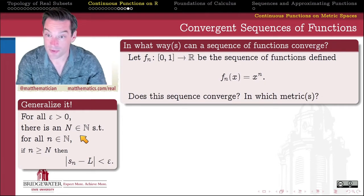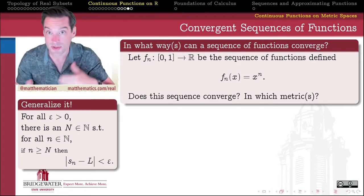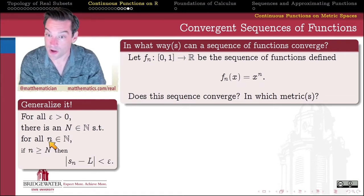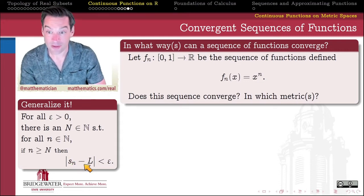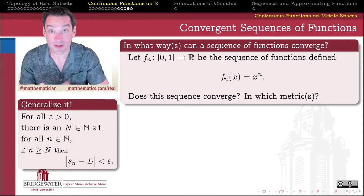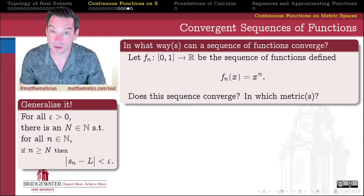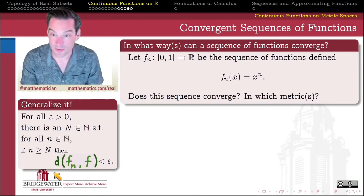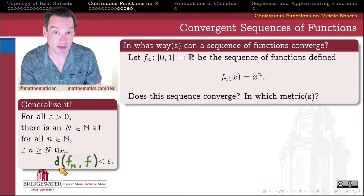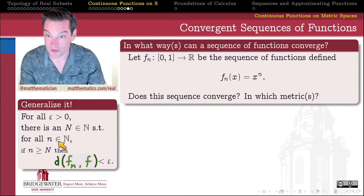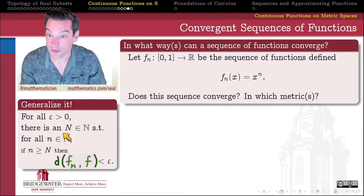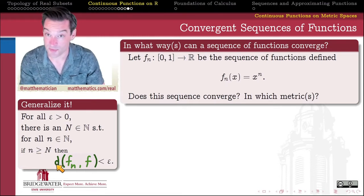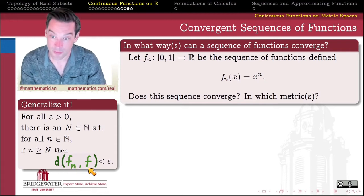The first thing we ought to do is generalize the definition of convergent sequence. Our definition from sequences of real numbers specifies that for any ε > 0, we can find a natural number N such that for all natural numbers n, if n ≥ N, then the absolute value of the difference between the nth term and the limit L is less than ε. To generalize this, we replace the absolute value of the difference with some appropriate metric. So a sequence of functions fₙ converges to a limit function f if, for all ε > 0, there is an N such that for all n ≥ N, the distance — with respect to whatever metric we've chosen — between fₙ and f is less than ε.